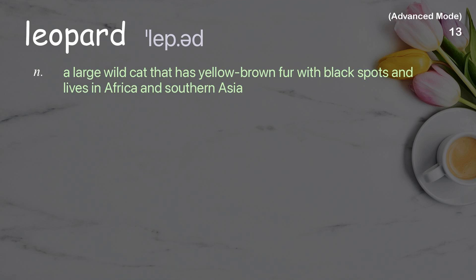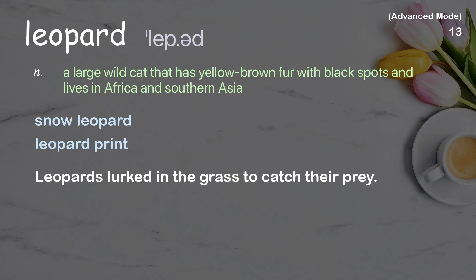Leopard: a large wild cat that has yellow-brown fur with black spots and lives in Africa and southern Asia. Examples: snow leopard; leopard print. The leopard lurked in the grass to catch their prey.